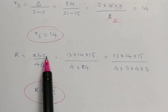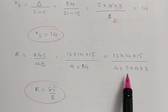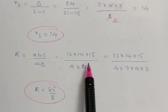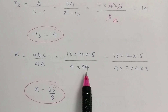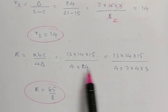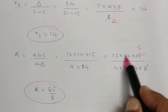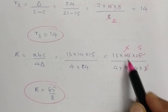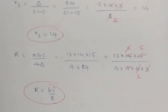Capital R is given by R = (a × b × c) / (4 × delta) = (13 × 14 × 15) / (4 × 84). Writing 84 as 7 × 4 × 3: simplifying, 13 × 5 = 65, divided by 8, gives 65/8. We have now calculated all the values asked, so the problem is complete.